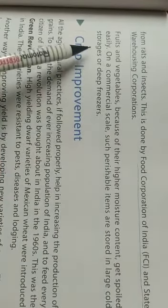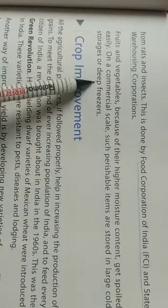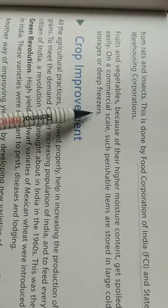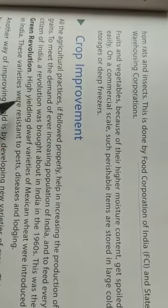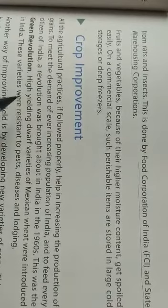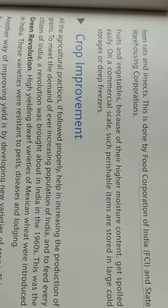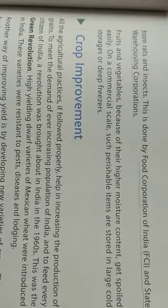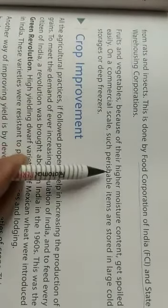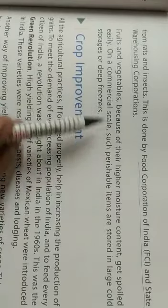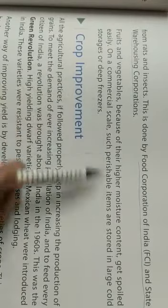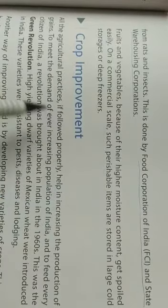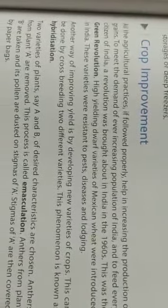This large-scale storage is managed by organizations like the Food Corporation of India (FCI) and state warehousing corporations. Fruits and vegetables, because of their high moisture content, get spoiled easily. On a commercial scale, such perishable items are stored in large cold storage facilities to keep them fresh.